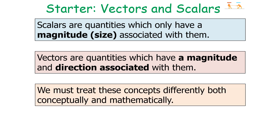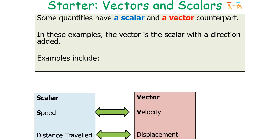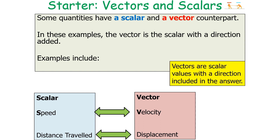We've got to treat these concepts differently, both mathematically and conceptually. It's important to note that some quantities have both a scalar and a vector counterpart, where the vector is the scalar with a direction added. The most common examples are speed being a scalar and velocity being the vector counterpart, and distance travelled being the scalar and displacement being the vector counterpart.